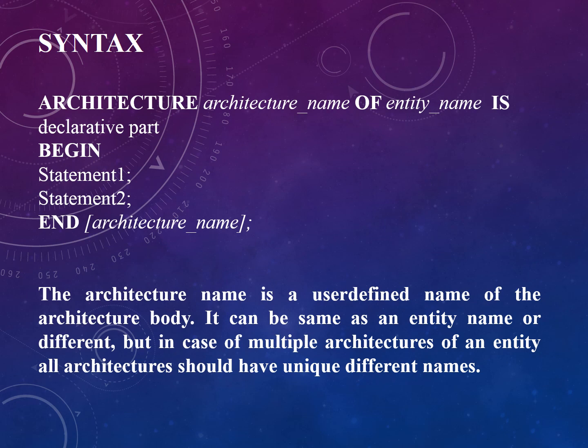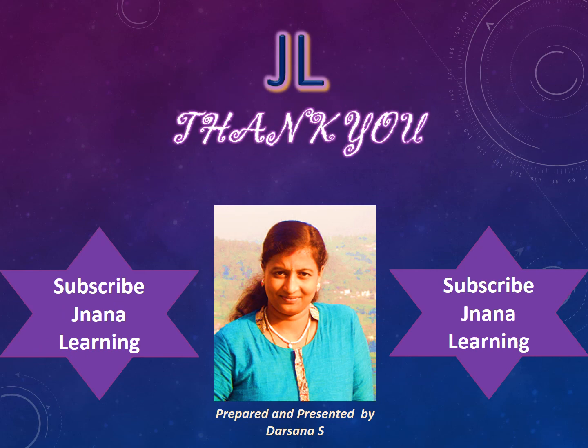The syntax of architecture is: the keyword 'architecture' followed by the architecture name, then 'of', then the entity name, then 'is', followed by the declarative part, then 'begin', then the statements, and ending with the architecture name. The architecture name is a user-defined name for the architecture body — it can be the same as the entity name or different. In the case of multiple architectures for an entity, all architectures should have unique names. That covers the entity and architecture design units, completing the introductory lecture on VHDL.